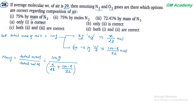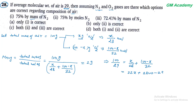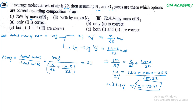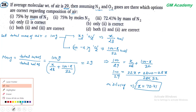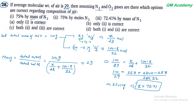इसको solve करते हैं: 100/29 = X/28 + (100−X)/32। Further solving: (32X + 2800 − 28X) / (28 × 32)। X की value = 72.41, यानि nitrogen का by-mass percentage 72.41% है।